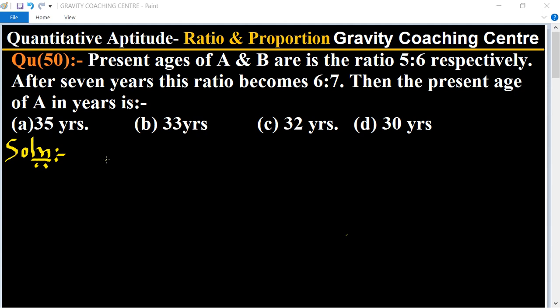Then the present age of A in years is: The present ages of A and B is given 5 is to 6.